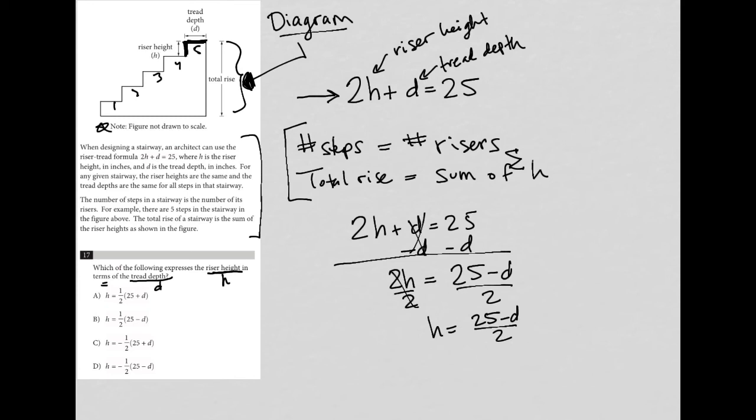So that should be my answer. I look at the answer choices. I don't see that exactly. But what I do see is in choice B. It's the same, it's just written a little bit differently. So 25 minus D divided by 2 is the same as saying one half of 25 minus D.